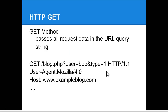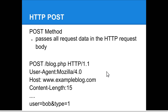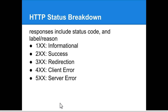The other method is POST. POST passes all the request data in the HTTP request body, so you no longer see the specific resource followed by the request data in the URL — it's actually down here in the body of the request. There are five categories of HTTP response status codes.